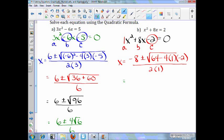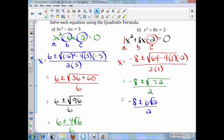all of that over 2 times a. Okay, simplifying this, negative 8 plus or minus 64 plus 8 is 72 over 2. Now, 72 can be broken down into square root of 36,